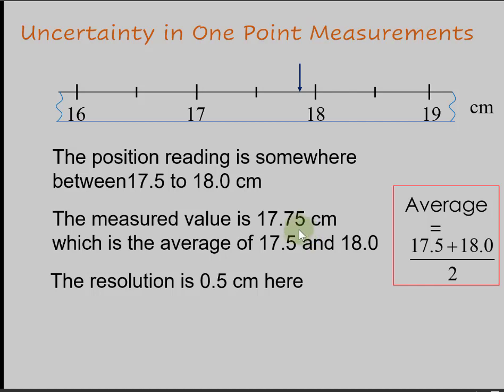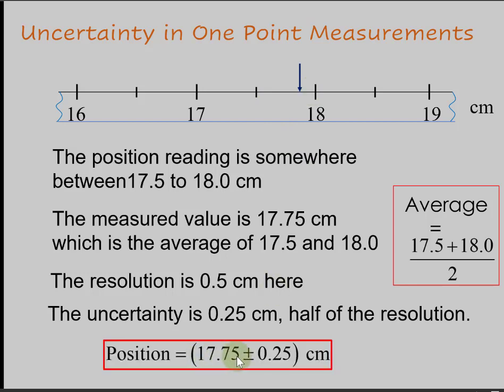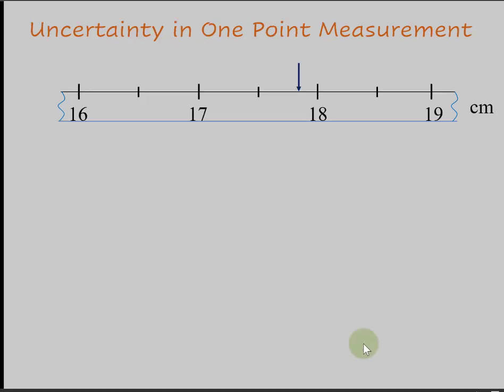In this case, this is half of the measured resolution. The resolution is the reading between the smallest division on that scale. Therefore, the measured value is 17.75, which is the average of the range we could read for sure, plus-minus the uncertainty, which is half of the resolution.